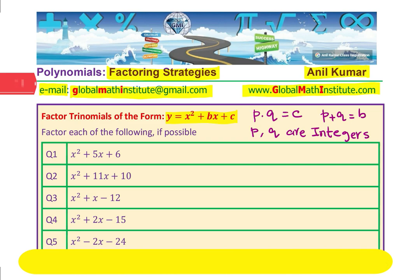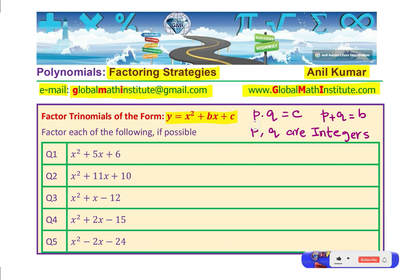When we are saying factor, we are saying that p and q are integers. You can always factor using a quadratic formula, get some decimal values. But here, our focus is factor fully over the numbers which are integers. So p and q will be integers.